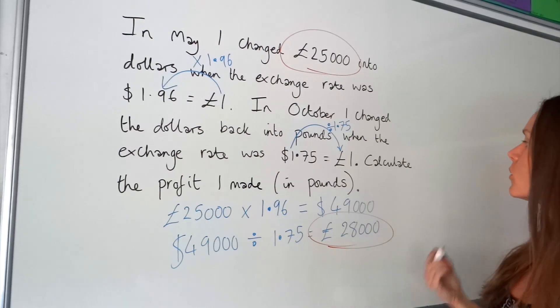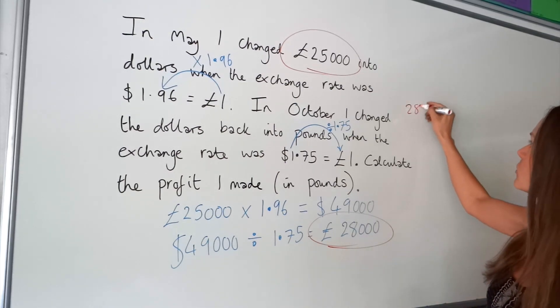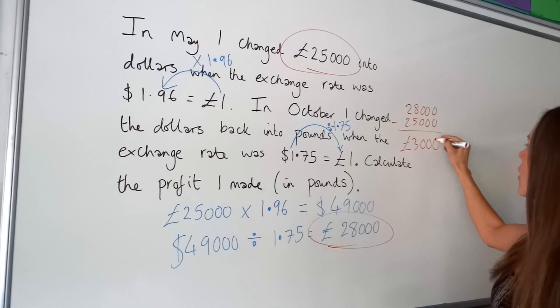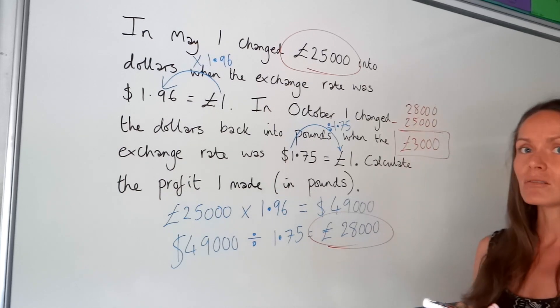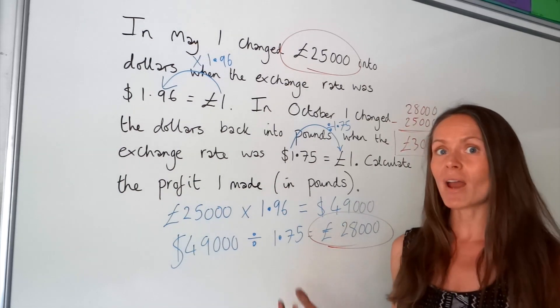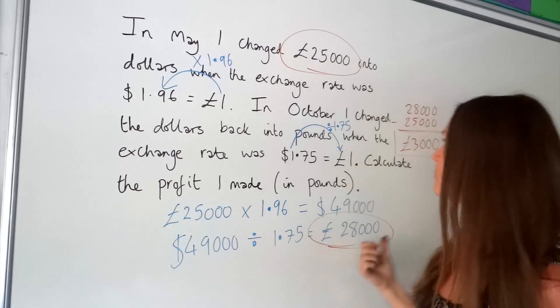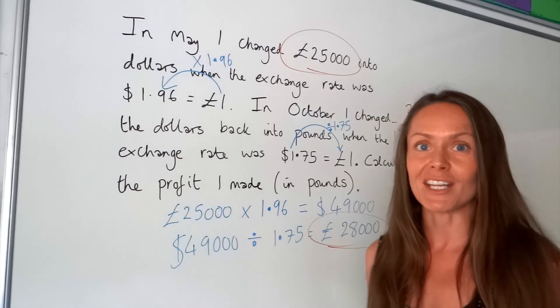To work out the profit, you just subtract the two to find the difference. You've probably already worked out what it is. The profit was £3,000. Just by understanding currency exchange, if you get lucky, you can make a profit. I've got one more to finish.